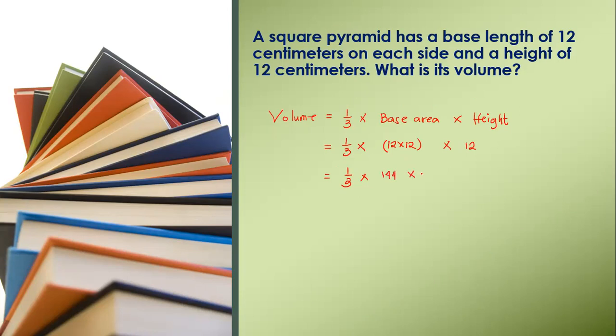144 times 12 equals 1728, and then divide it by 3 to get 576 cm cubed.